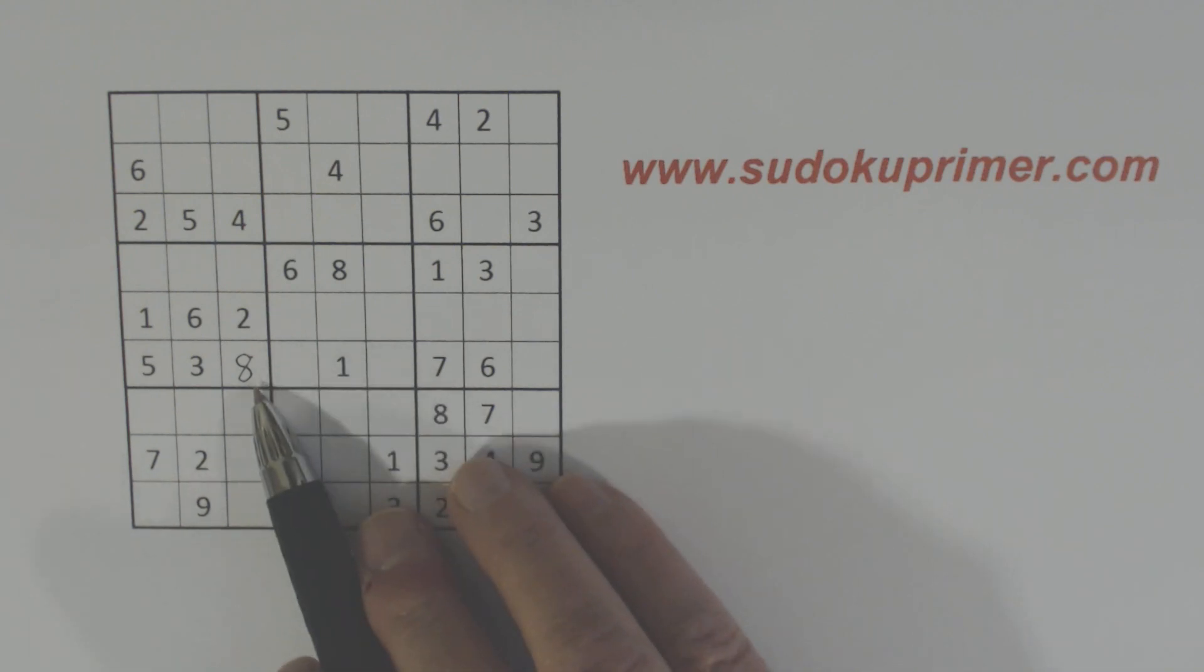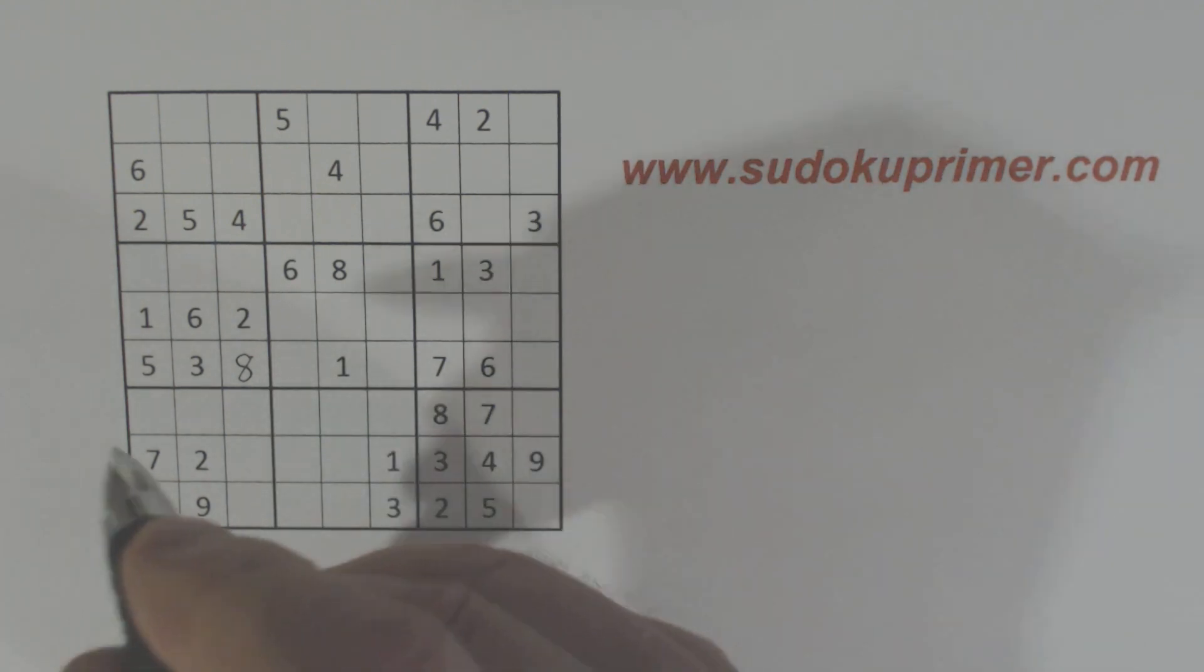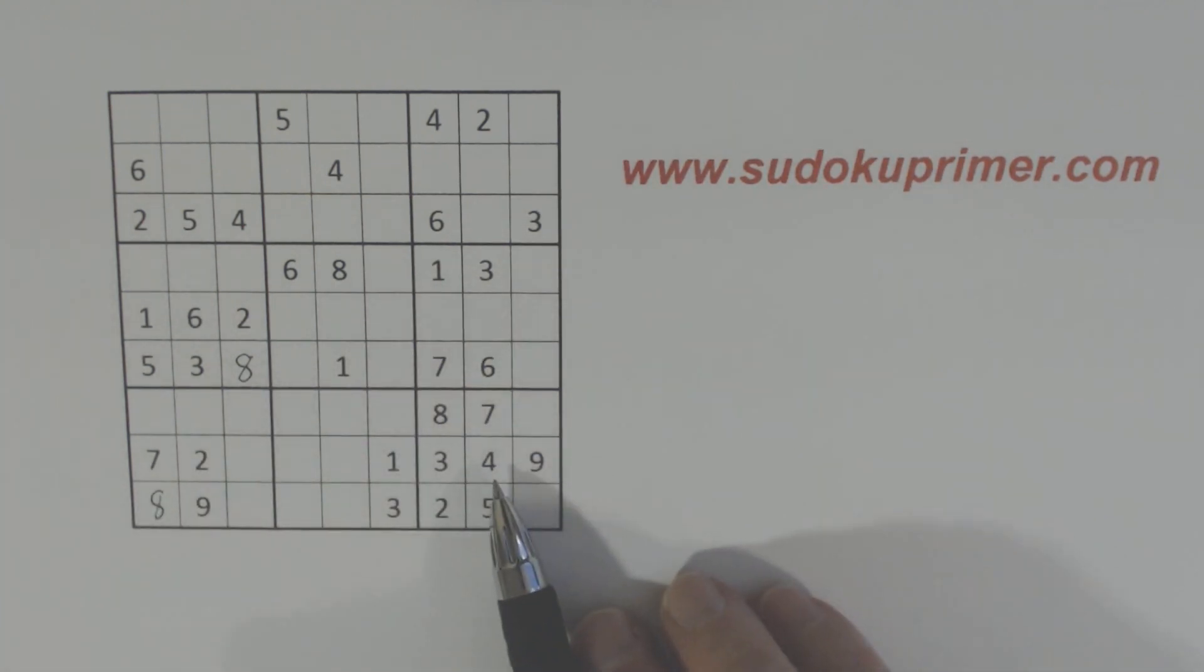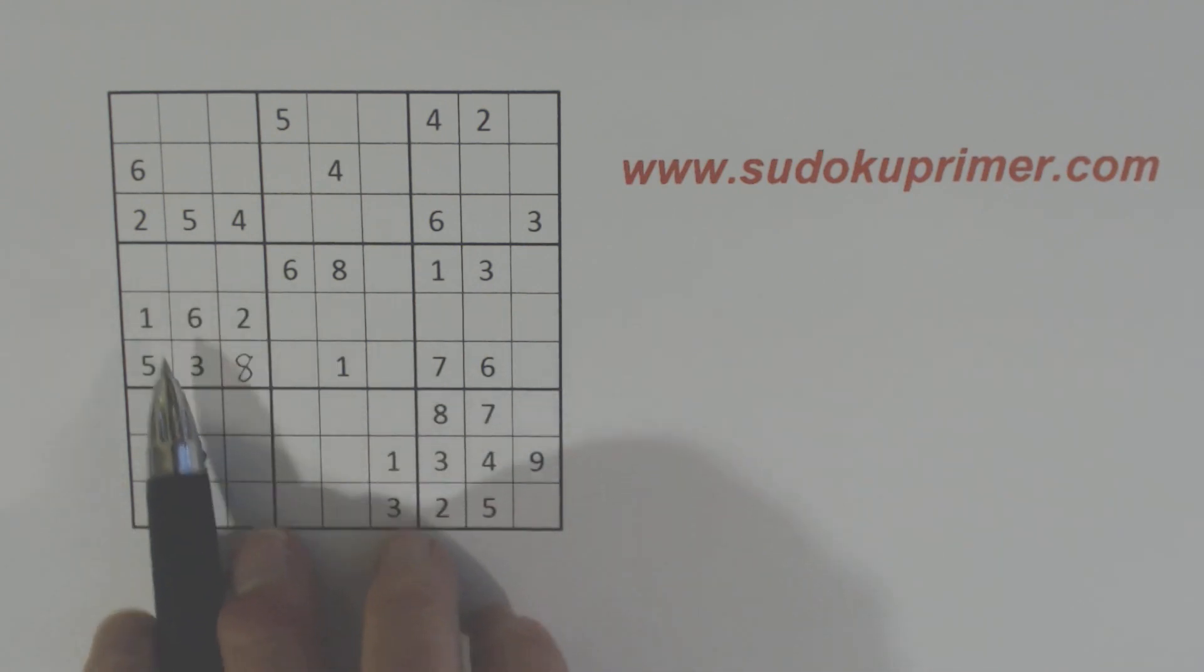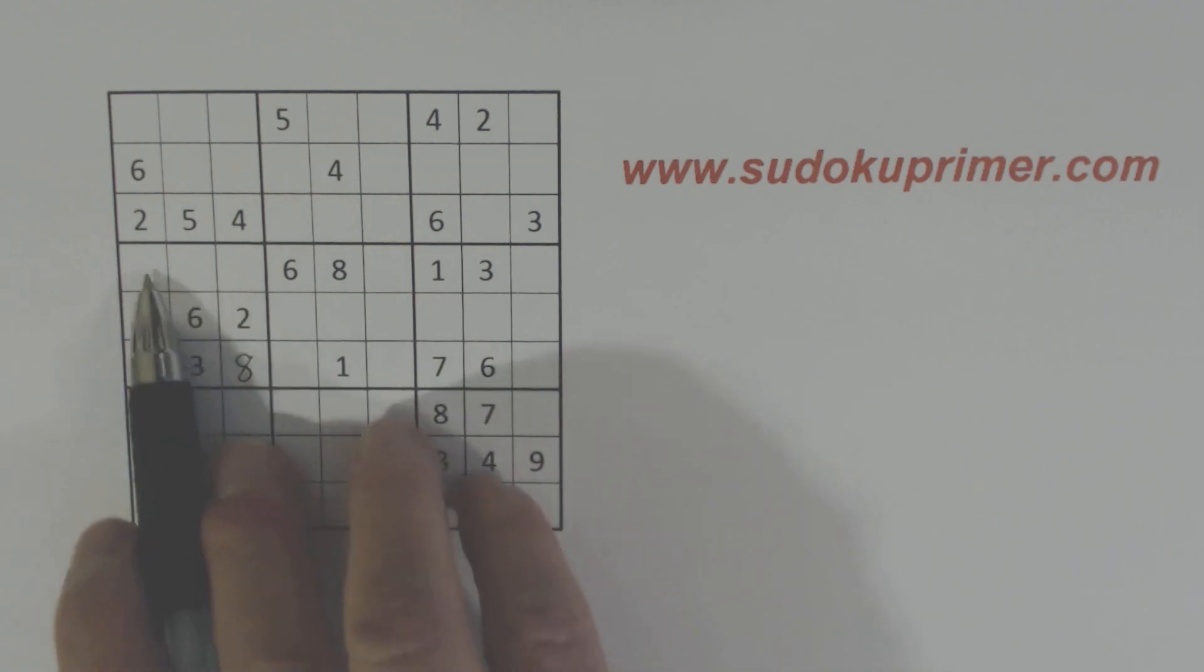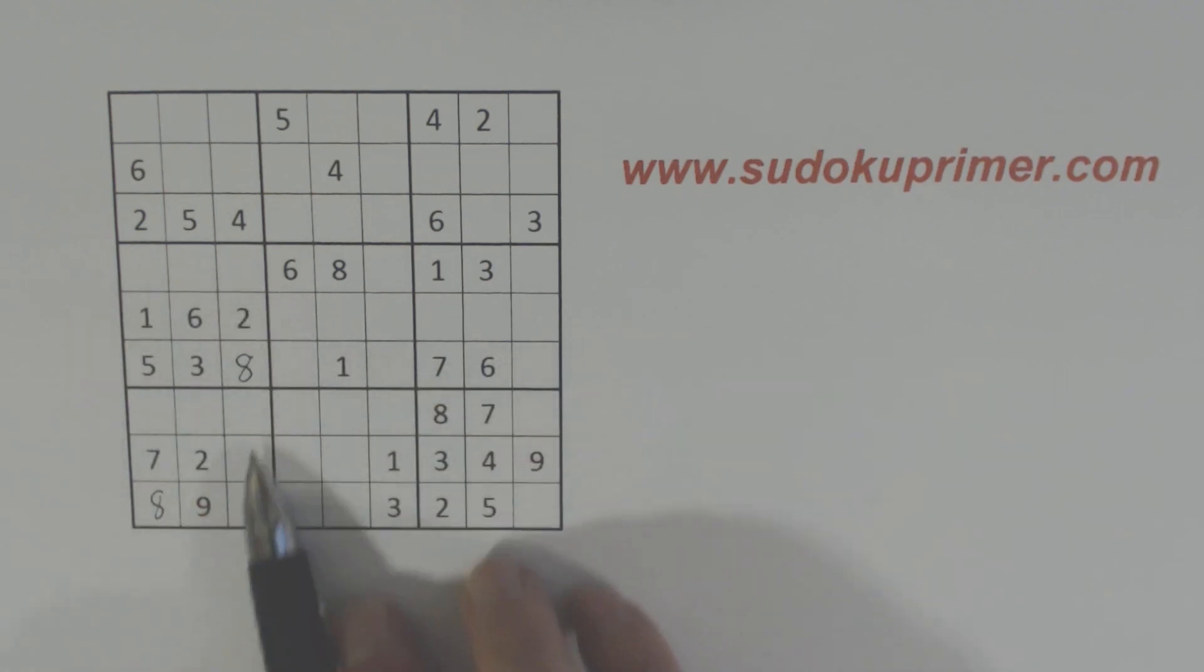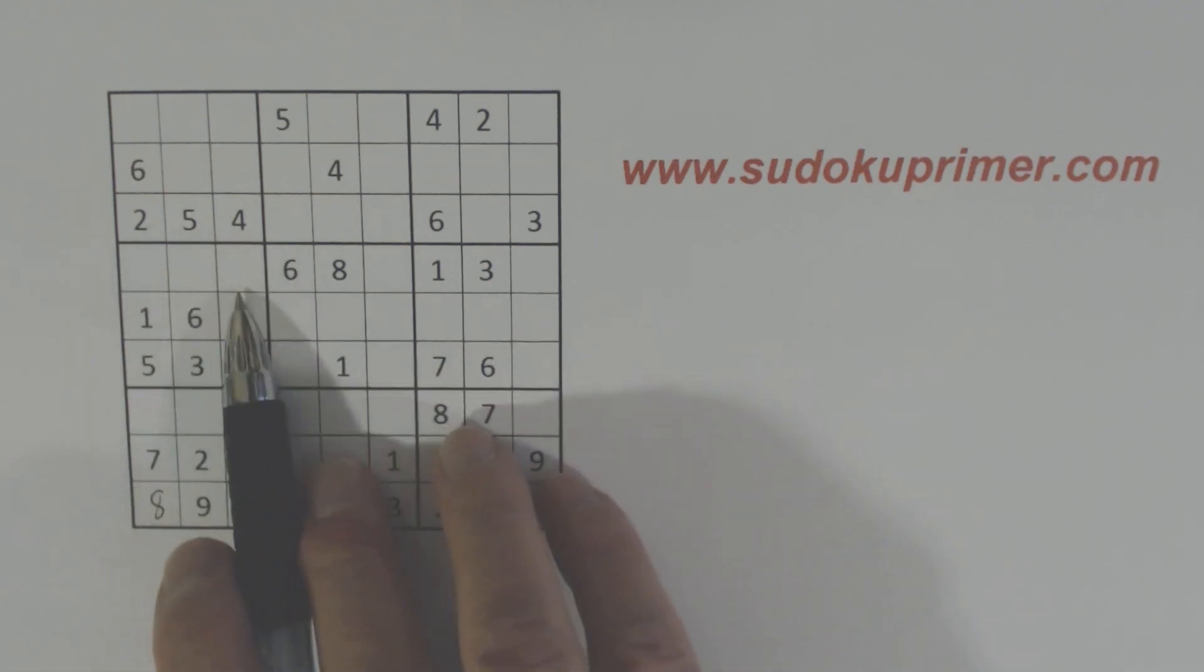So I filled this 8 in here already. Some of the numbers I put in I won't really explain because it would be pretty self-explanatory. But if I fill in a number that you don't understand how I got it, then please leave me a comment and I'll try and answer any questions you have. So this right here is 1, 2, 3, 4, 7, 9. And we can't solve that yet.